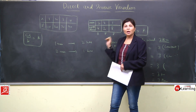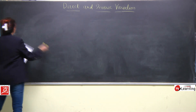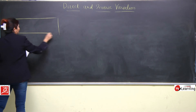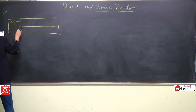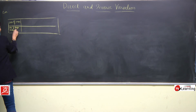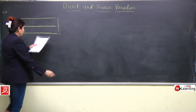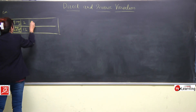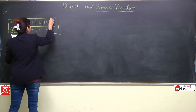Direct pe based examples hum ne kiye, ab aaj hum inverse pe based examples karenge. First basic example based on inverse variation — directly I am making a table. Number of men (x) and number of days required to finish a work (y). Entries: 2 men → 12 days, 4 men → 6 days, 6 men → 4 days, 12 men → 2 days, 24 men → 1 day.